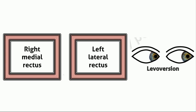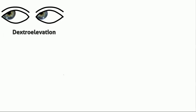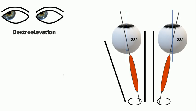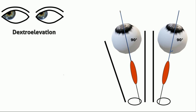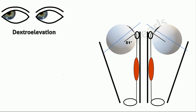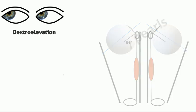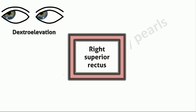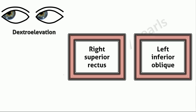For the other cardinal positions it is not that easy. First we shall understand the yoke muscles for these positions and then I will give you an easy way to remember them. For dextro elevation, you will recollect from my previous video that in abduction the maximum elevating action of the superior rectus and depressing action of the inferior rectus occurs. Similarly, in adduction the superior oblique is a better depressor and the inferior oblique is a better elevator. So the recti are most efficient for vertical movements in abduction and the obliques in adduction. Since the right eye is in an abducted position, the superior rectus is the prime elevator for the right eye, and the inferior oblique is the prime elevator for the left eye because it is adducted. So these two are the yoke muscles for dextro elevation.